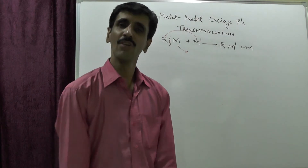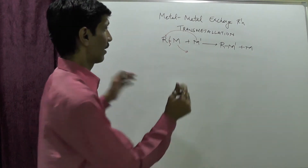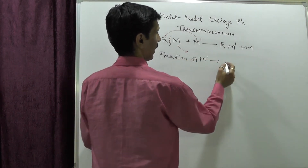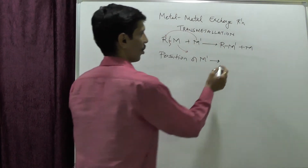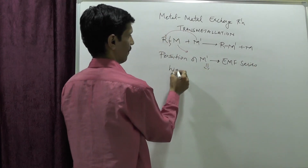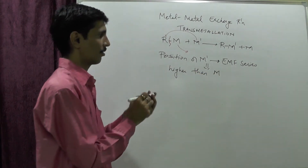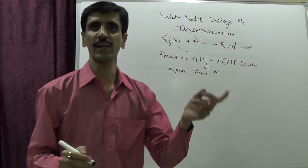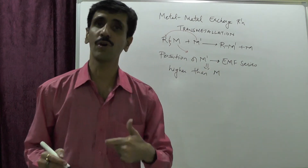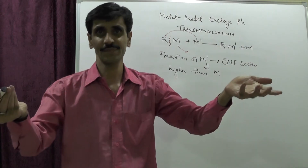The most important requirement is the position of M' in the electrochemical series, also called the EMF series. The position of M' in the electrochemical series must be higher than that of M. A higher position in the electrochemical series means greater reactivity and greater energy.